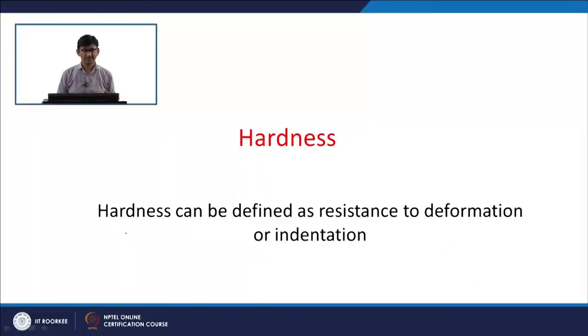Those were the NDT techniques. Now we will come to another part: one of the measurements we could not cover earlier in mechanical properties — that is hardness. This can also be considered a non-destructive way of finding out mechanical properties because you just put an indentation on the surface rather than doing a tensile test. If you want to compare a material with different heat treatments, rather than doing a tensile test for each, you can quickly find out how the hardness is changing and that will give you some indication about the strength or flow properties of the material.